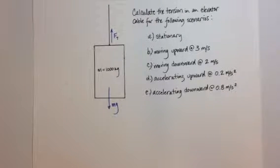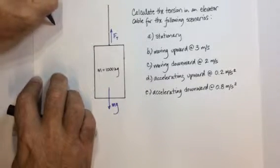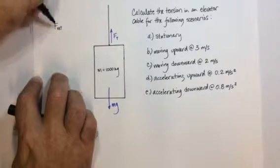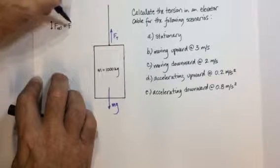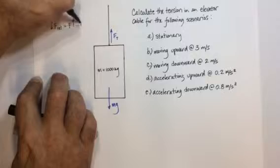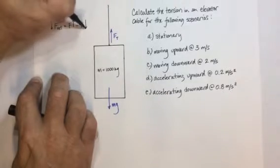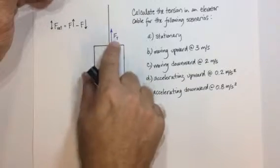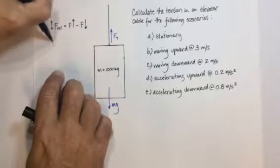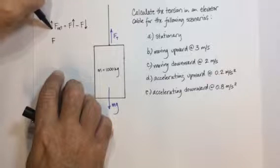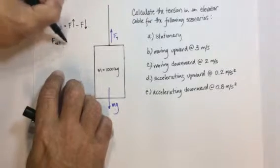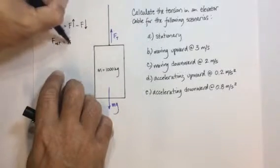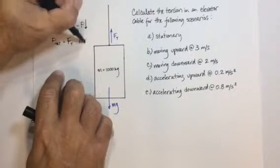Let's look at the formula that will guide our thinking. The net force in the vertical sense is equal to whatever up force there is minus whatever down force there is. The up force is always going to be the tension force. So we can rewrite our equation: net force is equal to tension force minus mg.